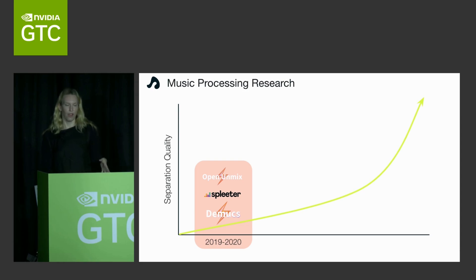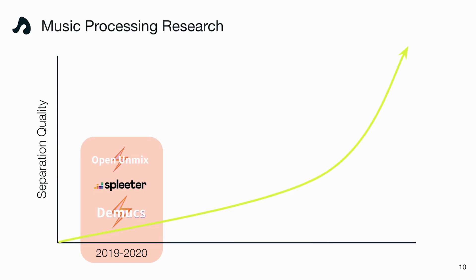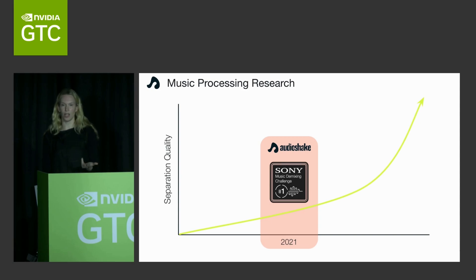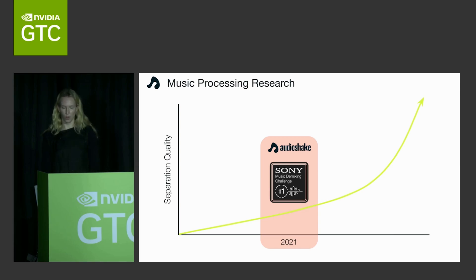People have been trying to separate sound for a really long time. Advances in deep learning opened up the field. Around 2019-2020, a handful of open source models inspired the ecosystem: Open Unmix, Splitter, and Demux all came out around the same time, enabling pre-processing for music information retrieval — tasks like beat detection. We were also working on sound separation at Audioshake and released our models in 2021. That was when Sony ran its first demixing challenge, which we won. Our models were an order of magnitude — several decibels — higher in quality than the open source models, pushing stems into more professional contexts.